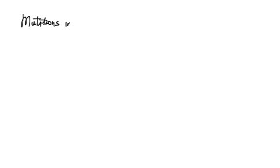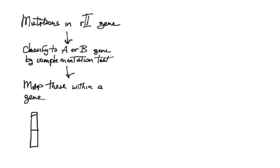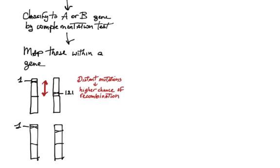Empowered by this discovery, Benzer isolated many R2 mutants, classified them as A or B by the complementation test, and mapped those within a gene. The principle was simple. Distant mutations provided more space in which crossing over could occur and had higher chance of recombination. Closed mutations provided less space and had lower chance of recombination.